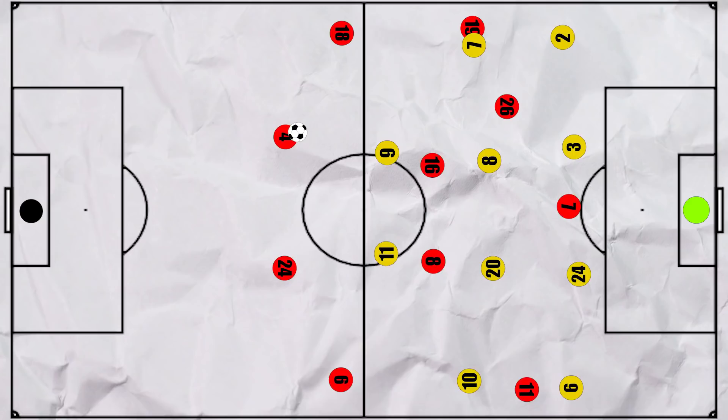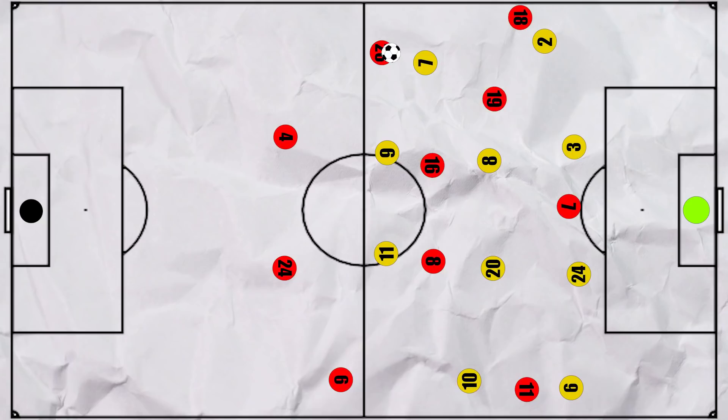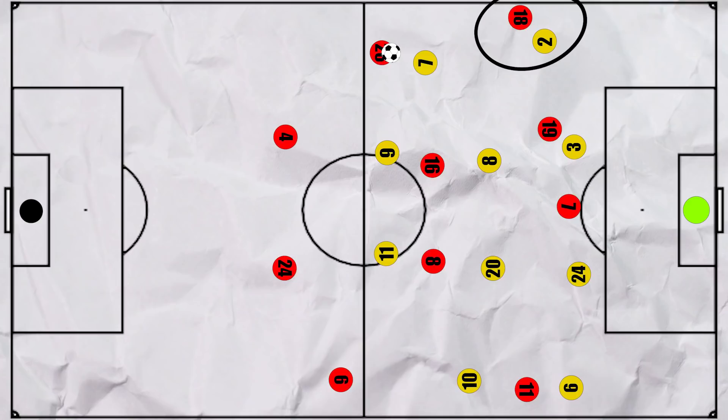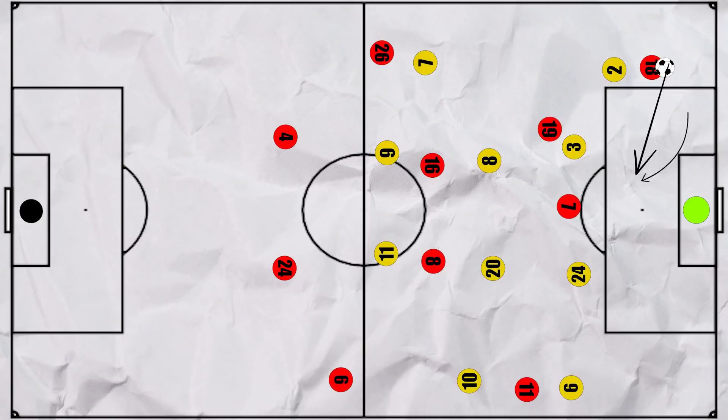In the second half, the shape was altered slightly. Pedri now tended to be the deepest man on the left, meaning that the Sweden pivot couldn't as easily track him. This also allowed Olmo to operate in much more central regions, looking to receive as well as support Morata. And as we all know, Alba is incredibly quick, so in these one-vs-one situations he would be able to get away from his marker, and Alba would then get into great positions to get crosses and pullbacks in.